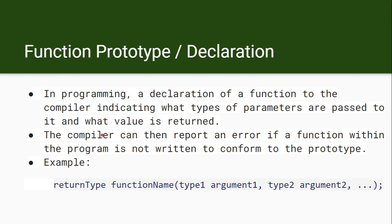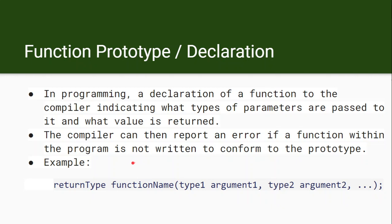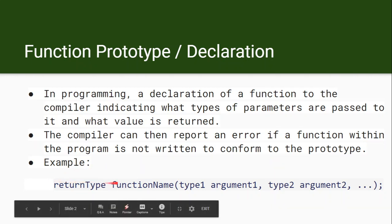Just as we get a syntax error for incorrect statements, when the function prototype does not match the function call or function definition, the system considers it an error. By this, the compiler is told the pattern of the function, the types of arguments, and the return type.